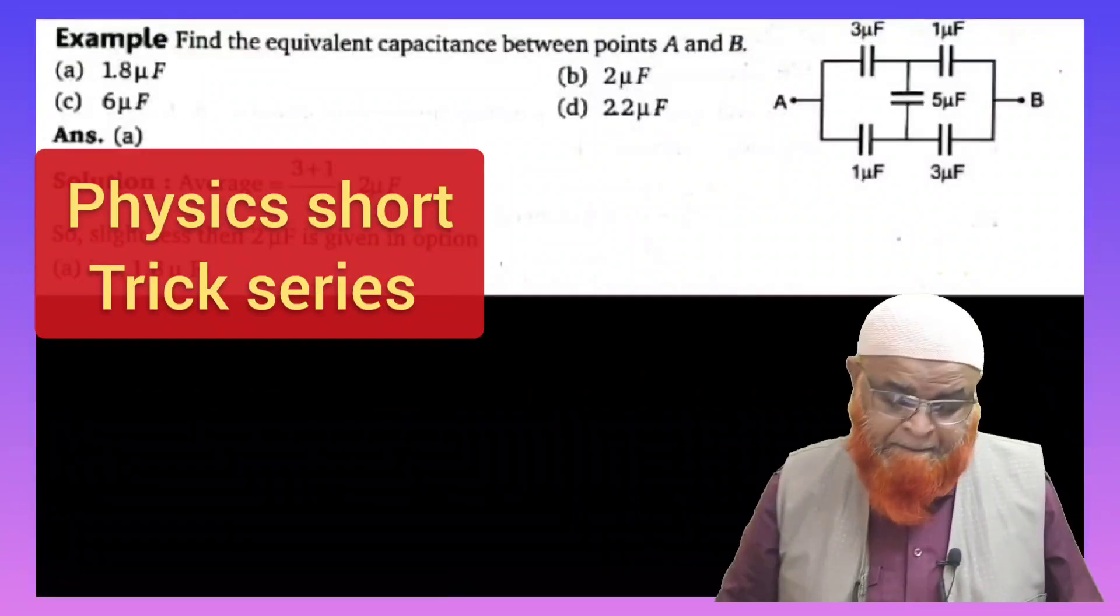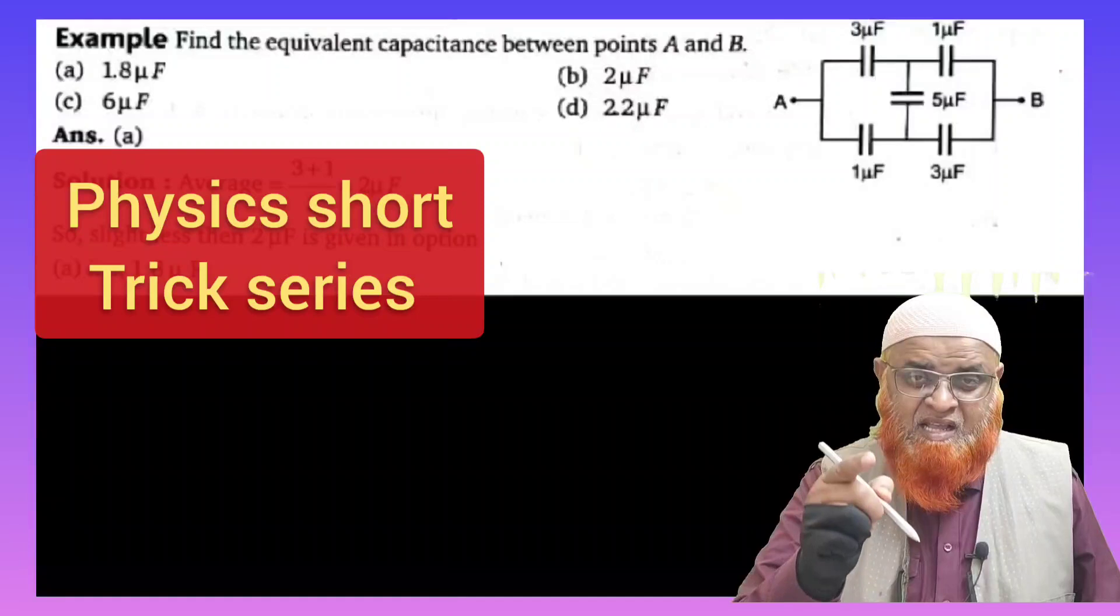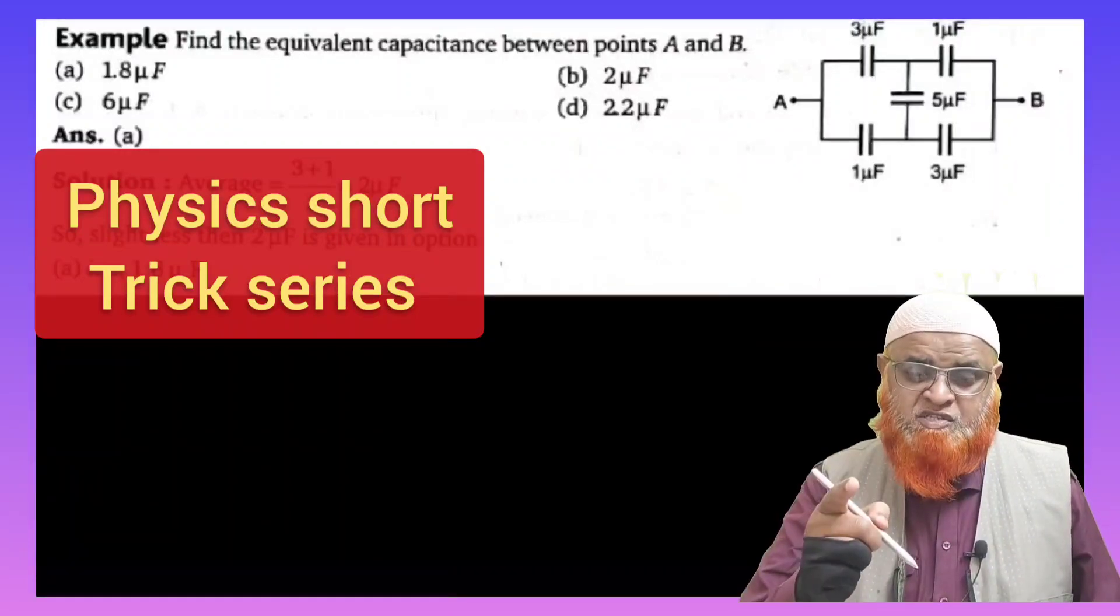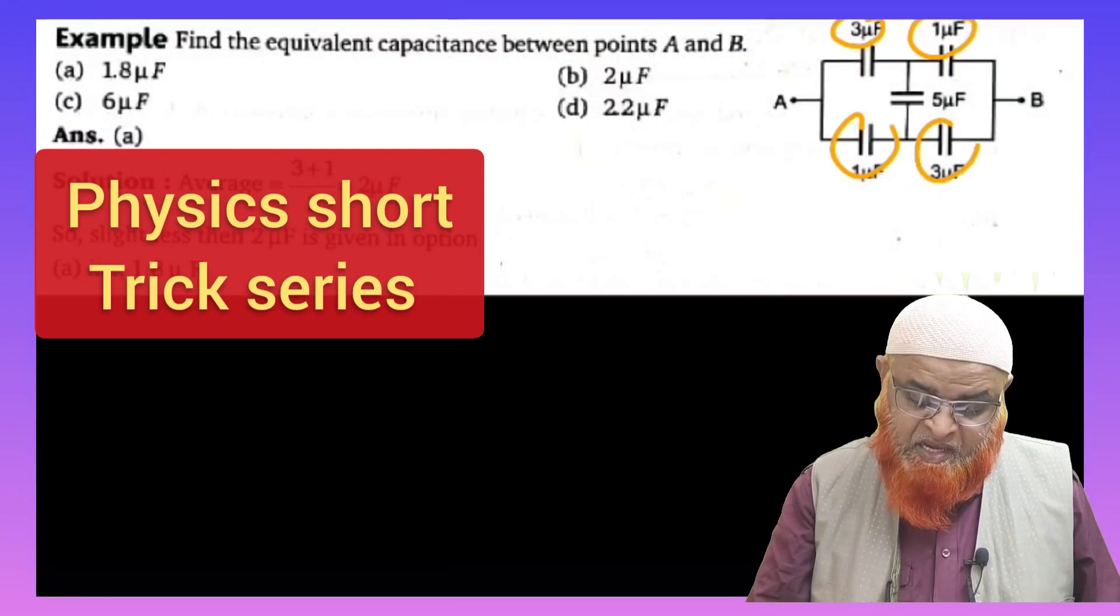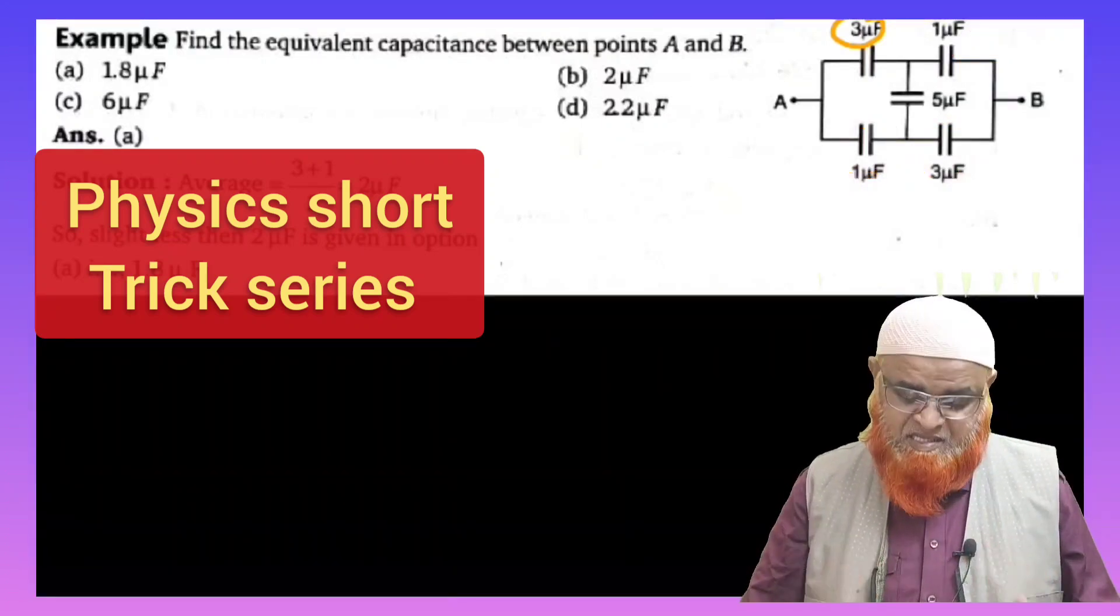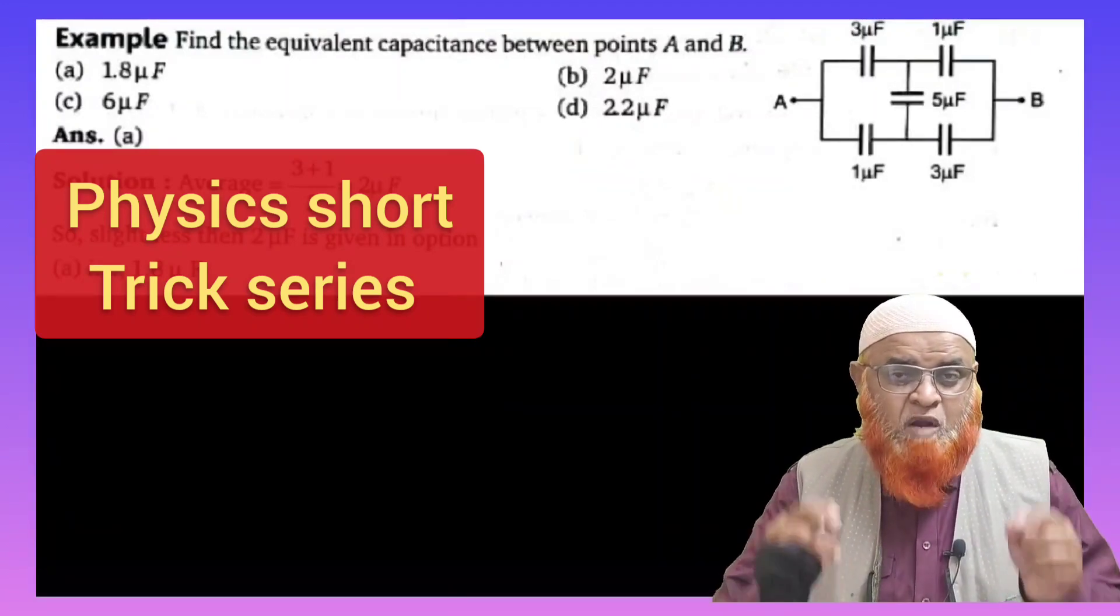Inshallah, I will tell you what is the shortcut here. So if you observe here, this is an unbalanced, unequal Wheatstone bridge in which there is 3 and 1 and again 1 and 3. It is not symmetry. You know that this is not going to be a symmetrical figure here, and this problem is solved by using Kirchhoff's first law for charges.